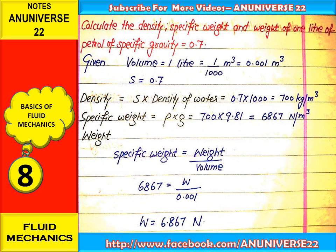This is the second numerical: calculate the density, specific weight and weight of 1 liter of petrol of specific gravity equal to 0.7. Firstly, write down the given variables. Volume is 1 liter — convert it into meter cube: 1 upon 1000 meter cube, that is equal to 0.001 meter cube. And specific gravity, denoted by capital S, is given for petrol as 0.7.